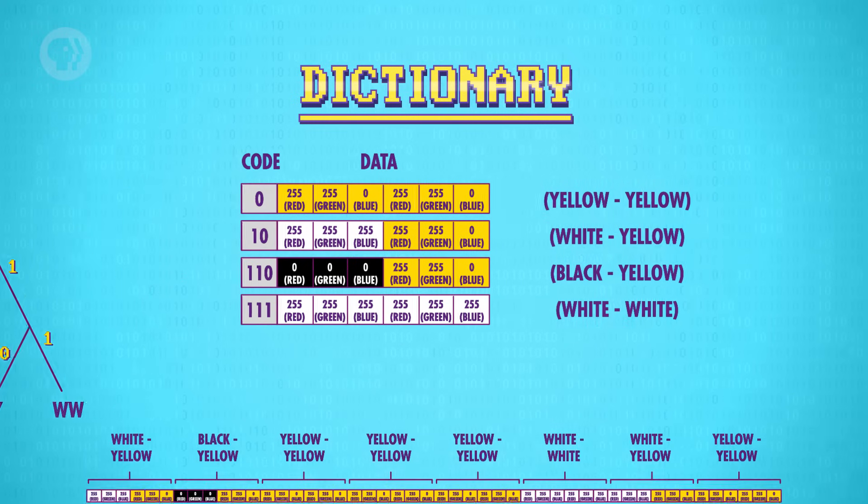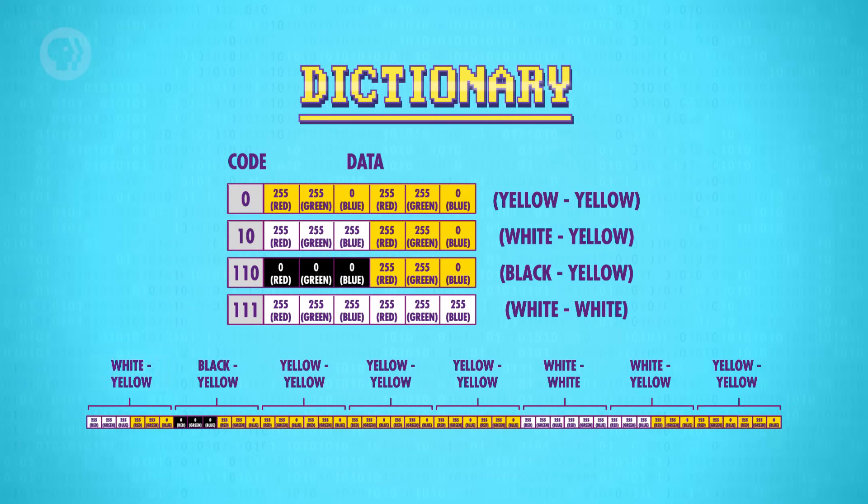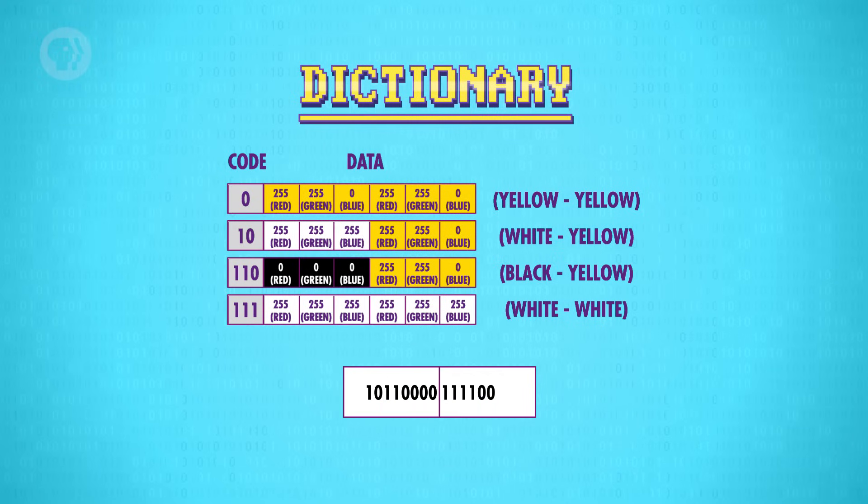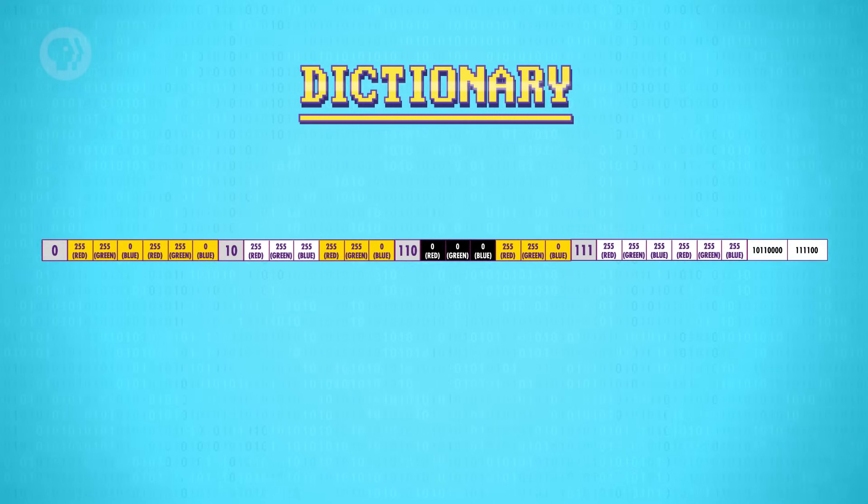Now let's return to our image data and compress it. Our first pixel pair, white yellow, is substituted for the bits one zero. The next pair is black yellow, which is substituted for one one zero. Next is yellow yellow, with the incredibly compact substitution of just zero. And this process repeats for the rest of the image. So instead of 48 bytes of image data, this process has encoded it into 14 bits. Not bytes, bits. That's less than two bytes of data. But don't break out the champagne quite yet. This data is meaningless unless we also save our code dictionary. So we'll need to append it to the front of the image data, like this. Now, including the dictionary, our image data is 30 bytes long. That's still a significant improvement over 48 bytes.